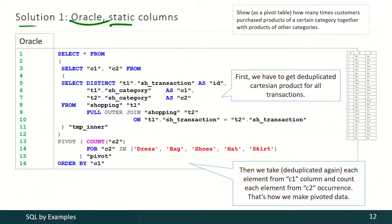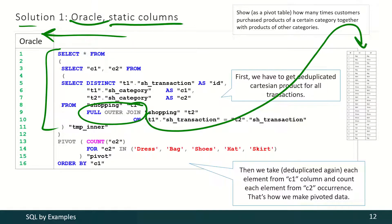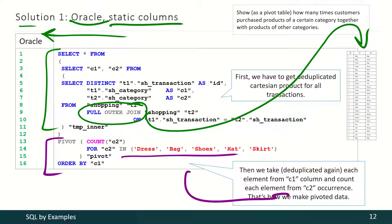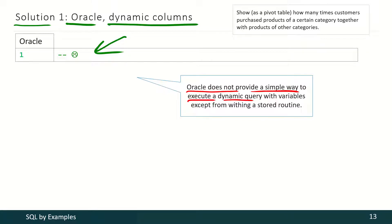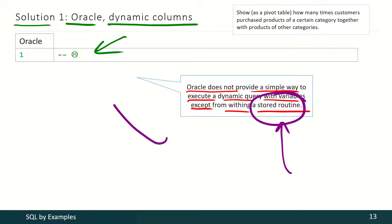In Oracle the solution for static columns is exactly the same as in Microsoft SQL Server. Here we use full outer join to produce the deduplicated Cartesian product, and then we use the pivot function to immediately produce the final result. Those category names are still static here. If we want dynamic columns in Oracle, there's a bad surprise — Oracle does not provide a simple way to execute a dynamic query with variables except from within a storage routine. Nevertheless, you may create such a storage routine yourself and produce that solution.